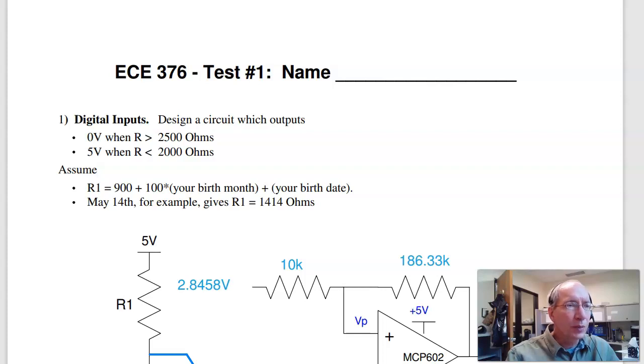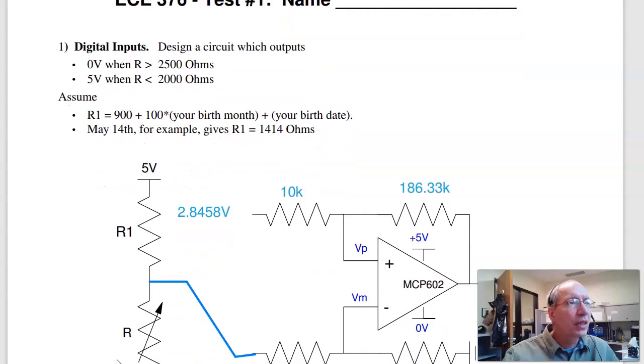Here are solutions to test number one for 376 embedded systems. On this test we're looking at binary inputs and outputs along with assembler programming. Now the first problem has to come up with a circuit that outputs zero volts when a resistor is greater than 2,500 ohms, five volts when less.